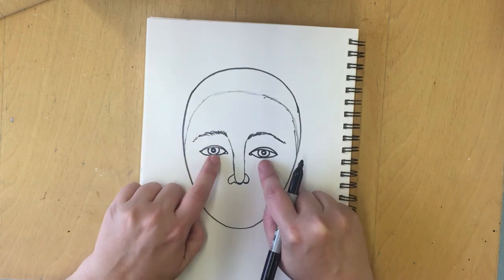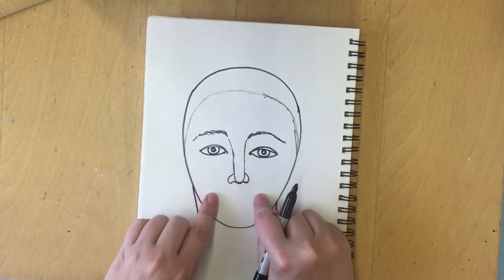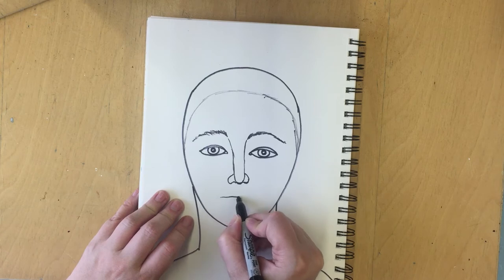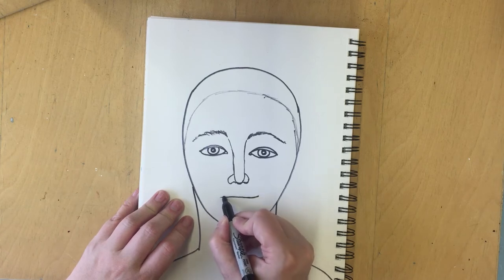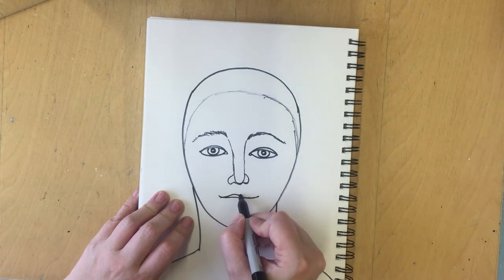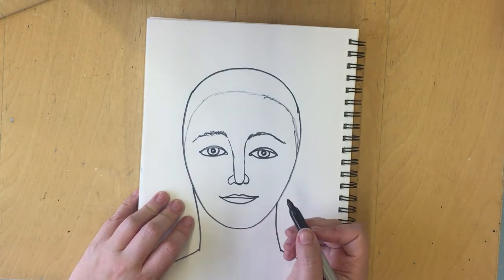The next thing I'm going to look at is my mouth, and I am noticing that my mouth is as wide as my pupils. So I'm going to start off with the line in between my lips and give myself a little smile. Then I'm going to draw a line for the top lip and a line for the bottom lip.